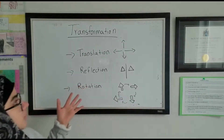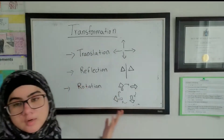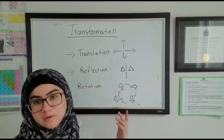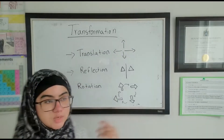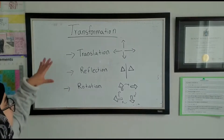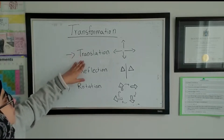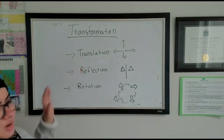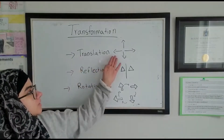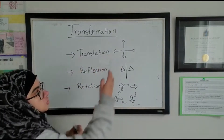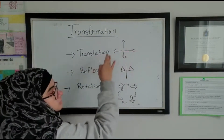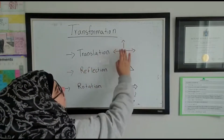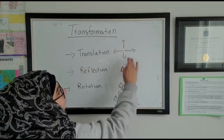Please pay attention if you want a quick review so you can benefit from watching this video. So the transformation — there are three types. One is translation. Translation means if this is your shape, you're sliding it. Translation is a kind of sliding — sliding your shape up, right, down, or left.